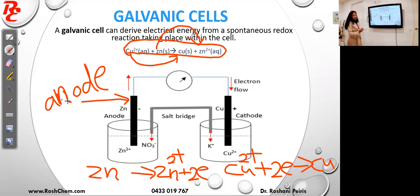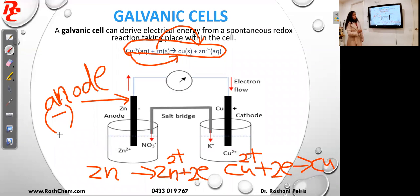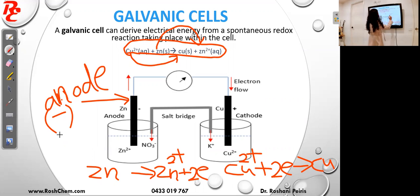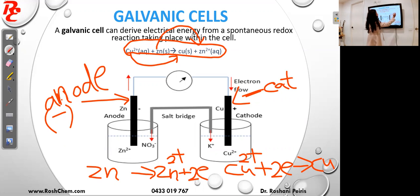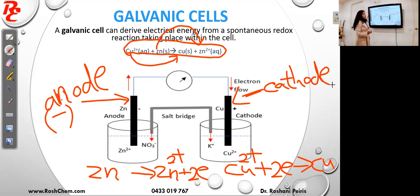In a galvanic cell the anode is negative, so it is the negative terminal of the galvanic cell. The electrode where reduction happens is called the cathode, so the copper electrode is the cathode here, and the cathode is positive in a galvanic cell.